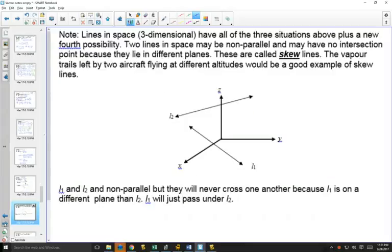In three dimensions, you have all of those - they could be parallel, they could be the same, they could intersect at one point - but you add a new one called skew lines. They're not parallel, but they still don't intersect.